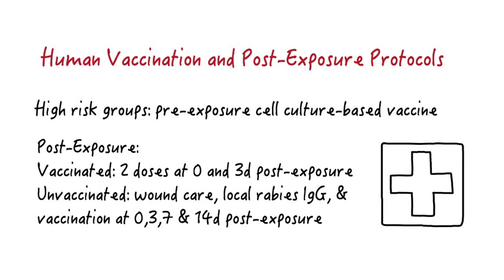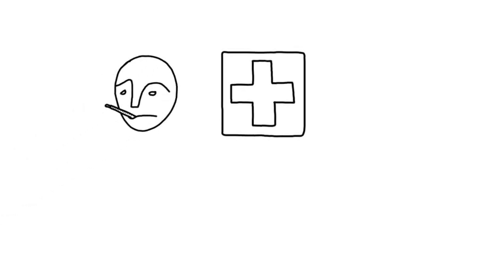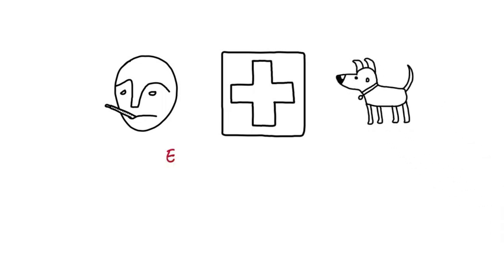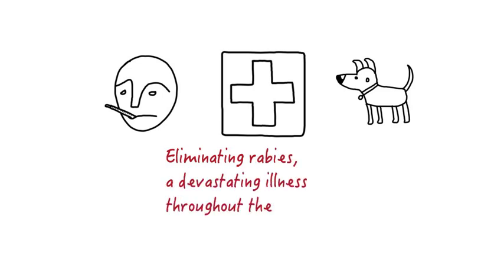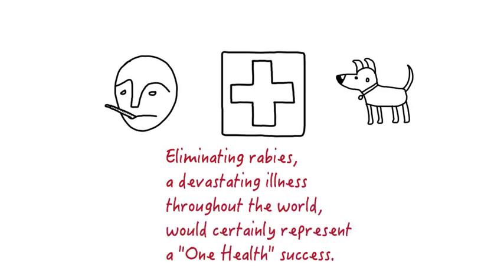However, if an unvaccinated person is bitten by a rabid animal, recommended treatment consists of wound care, infiltration of rabies immune globulin, and vaccine administration on days 0, 3, 7, and 14 post-exposure. Timely post-exposure prophylaxis virtually assures human survival. The preventative vaccination approach represents a one-health approach to disease control, leading to simultaneously better health outcomes for animal and humankind, as prevention in common vector species is crucial.